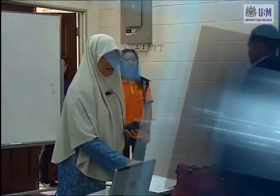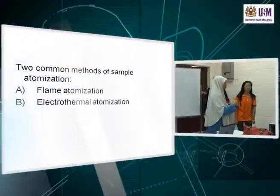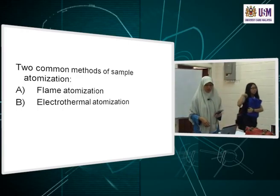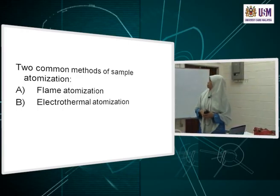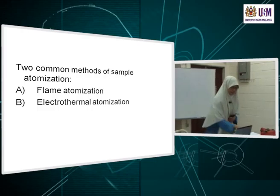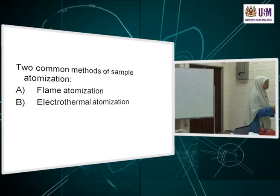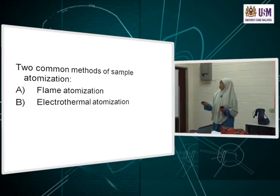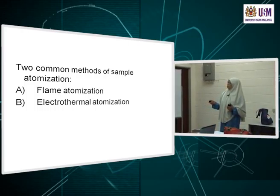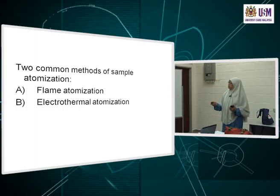I'm discussing the flame — two types of atomization: flame and non-flame, or electrothermal. With the flame, certain elements require a lower temperature and some require higher temperatures. This is a listing showing the different elements at the recommended wavelengths and the flame gases to be used.